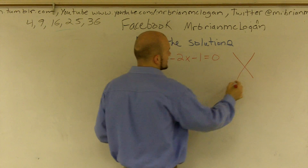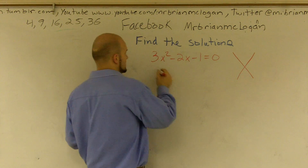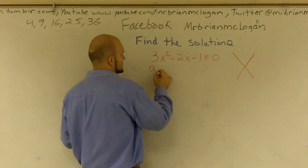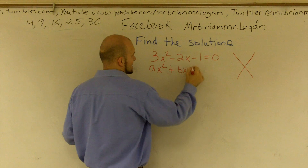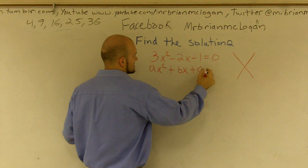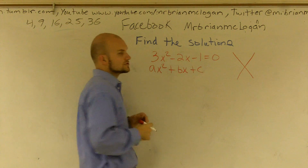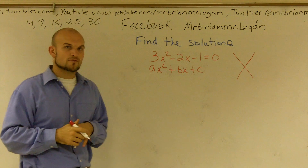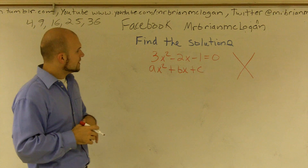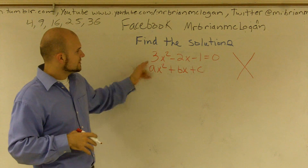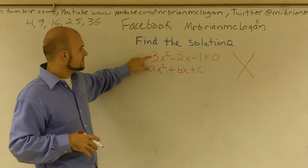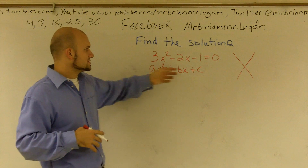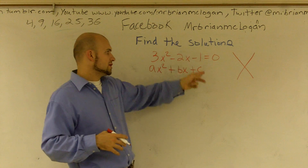So here, if you guys remember, when you're doing factoring, you have ax squared plus bx plus c — that's a quadratic form. Usually when you have a's greater than 1, what we do is we say what two numbers multiply?